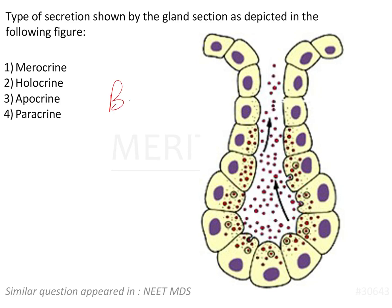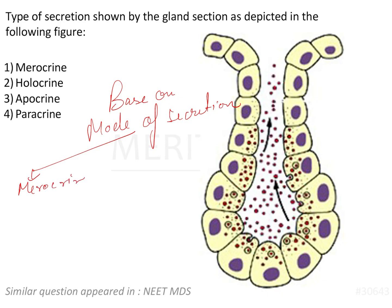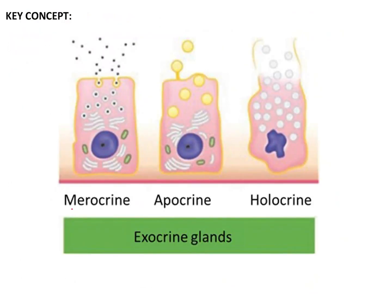If we classify the various glands based on mode of secretion, we have three important categories: merocrine, apocrine, and holocrine. Looking at the figure, we can see all three types and will be discussing their differences.